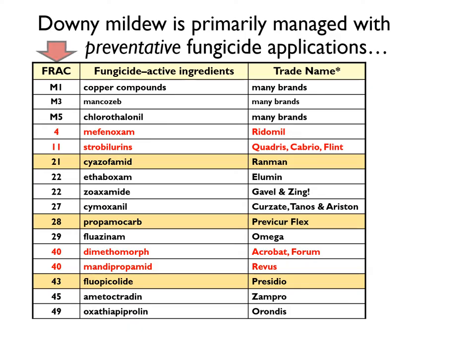Fortunately, there are a number of fungicides available to manage downy mildew. These fungicides have diverse modes of action as indicated by the different FRAC codes. However, only those fungicides noted with a star are broad spectrum. All the other fungicides are specific to oomycete pathogens and are not effective against other classes of pathogens, emphasizing the need for proper disease diagnosis.